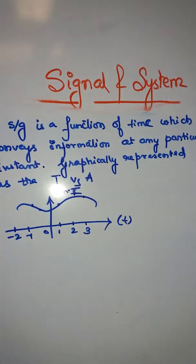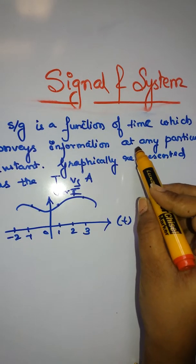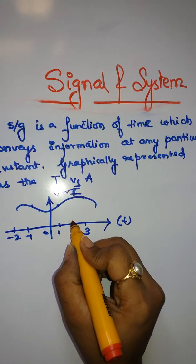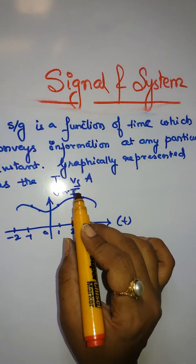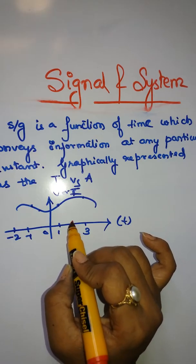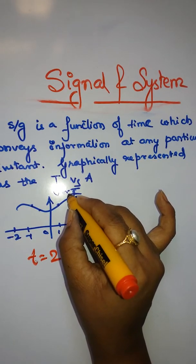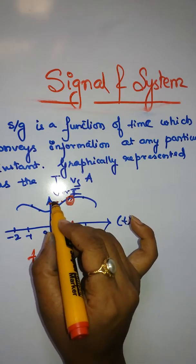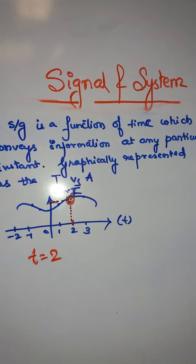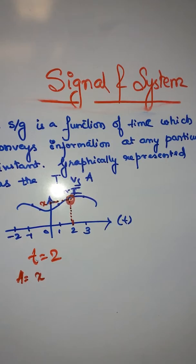The definition says a signal is a function of time which conveys information at any particular instant. So suppose at time t equals 2, if we want to know the amplitude - it may be current, voltage, whatever - at this particular instant, you can mark here whatever the amplitude is. At time 2, suppose this is your x, x is your amplitude.